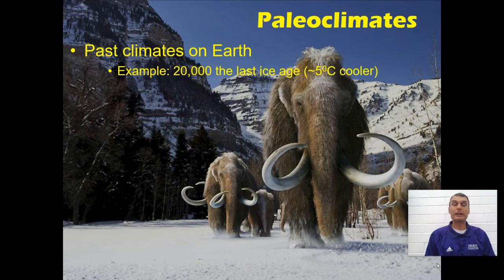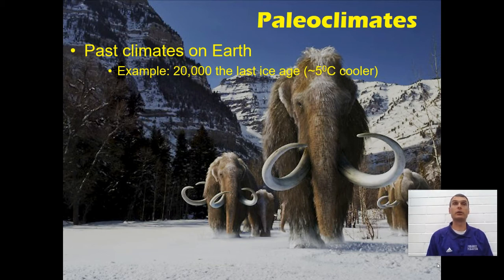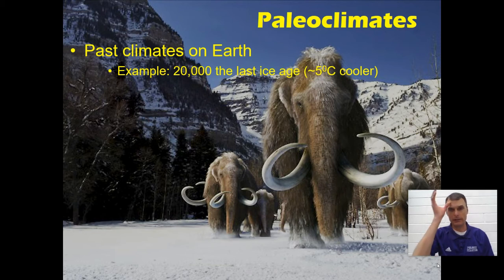So what is a paleoclimate? These are past climates on earth. An example would be the last ice age, which was about 20,000 years ago. During the last ice age, the average temperature on the planet was five degrees cooler than it is today. That doesn't sound like enough to make a significant change, but it did — and there were species that lived during that time and only during that time because of those climate conditions.